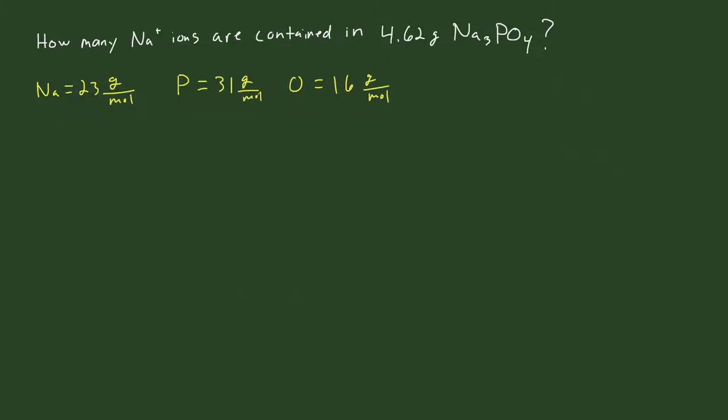In this problem, we're going to solve the following: how many sodium ions are contained in 4.62 grams of trisodium phosphate? Basically, what we're going to do is convert the number of grams of sodium phosphate into moles, and then from moles into number of ions.